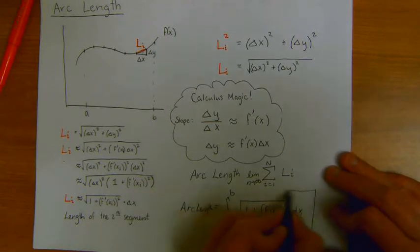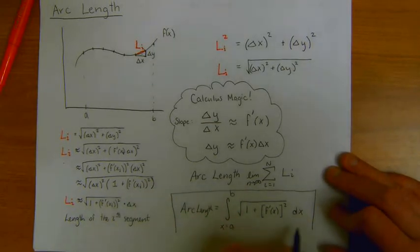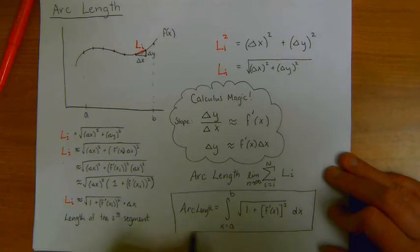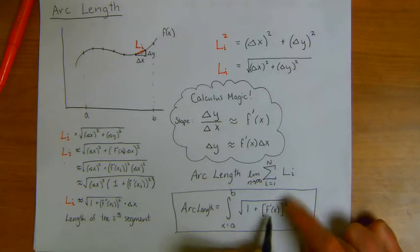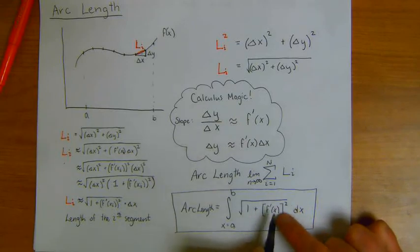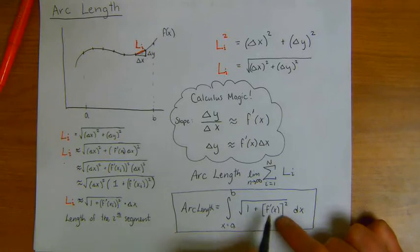One comment about this formula, something that's easy to mess up, there are two things here that I think are important. One is that you have to take the derivative first and then square it. Order of operations makes a difference here. Taking a function and squaring it and then taking its derivative is not the same thing as taking the derivative first. So you have to work inside to outside.